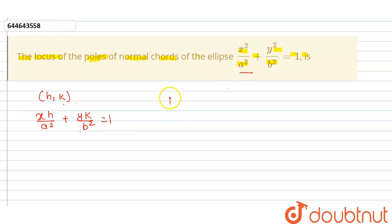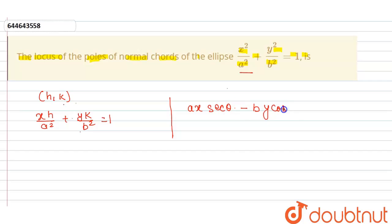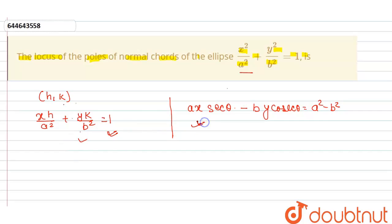This polar line is also the normal to the ellipse. The equation of the normal to the ellipse is: ax·secθ - by·cosecθ = a² - b². Since both equations represent the same normal, they must be identical.